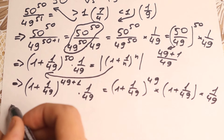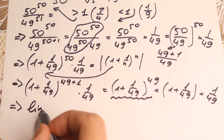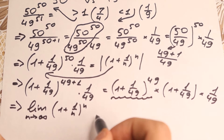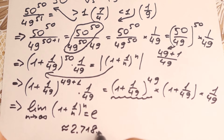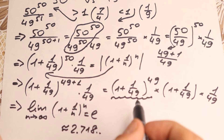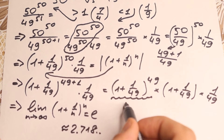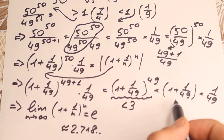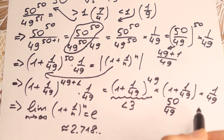Now I'm going to show a really interesting approach using limits. We want to recognize the expression (1 plus 1 over n) to the power n. If n approaches infinity, the limit of this expression equals e, which is approximately 2.718. Since our expression (1 plus 1 over 49) to the power of 49 has n = 49, which is finite, it is strictly less than e, and therefore less than 3. Also, (1 plus 1 over 49) equals 50 over 49.